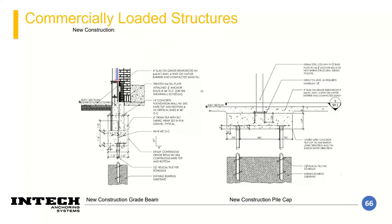For new commercial construction, this is an example of a new construction grade beam — a two-foot-wide by one-foot-six grade beam with reinforcing in the top and bottom of the foundation, designed to span over 12 feet between supports. To the right is a new construction pile cap for an isolated footing, designed similar to a standard spread footing for columns, with a pile cap design containing typically at least two piles depending on loading.